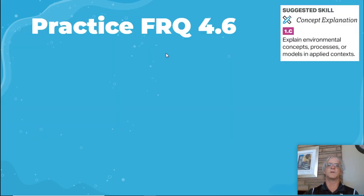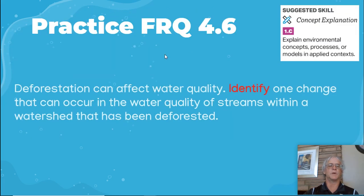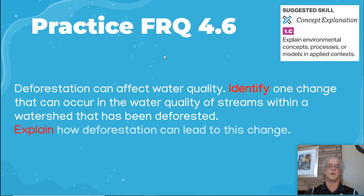Practice FRQ for 4.6: Deforestation can affect water quality. One, identify one change that can occur in the water quality of streams within a watershed that has been deforested. Two, explain how deforestation can lead to this change.